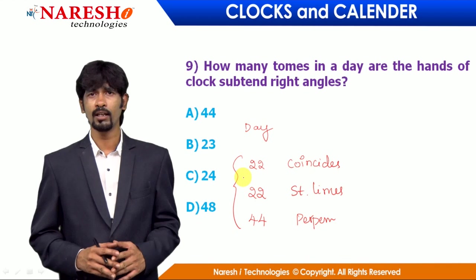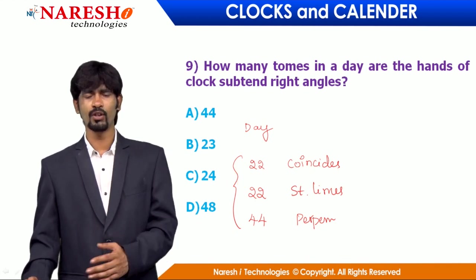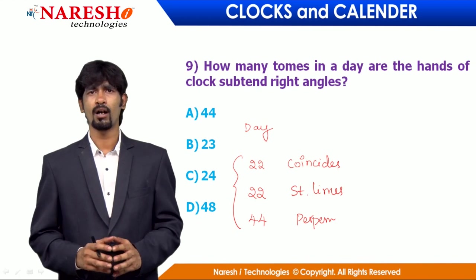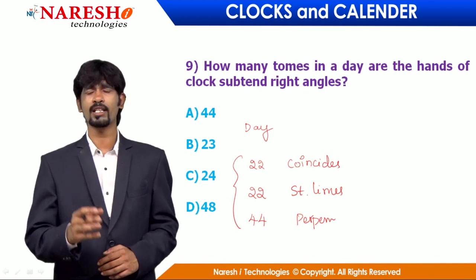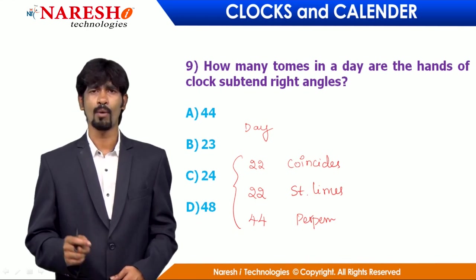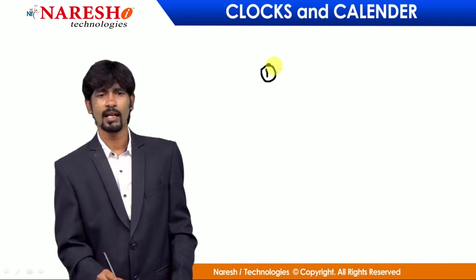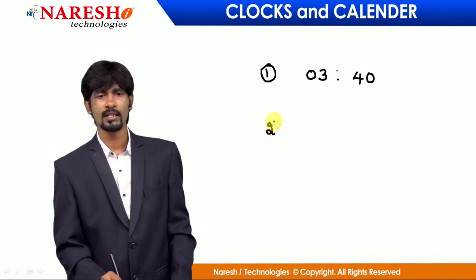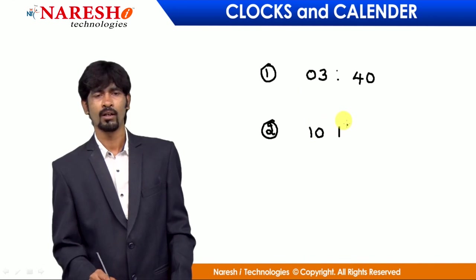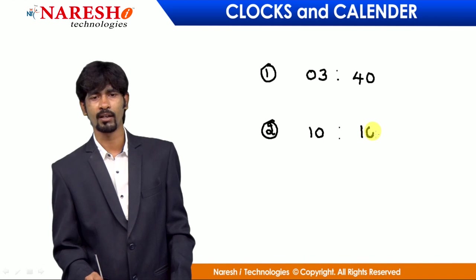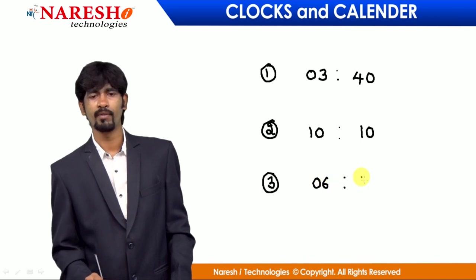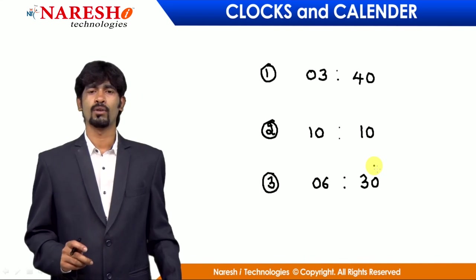I hope you have clarity on these questions. For homework, whoever has watched the video till the end: solve these three questions and put your answers in the comments. Question 1: time is 3 o'clock 40 minutes — what is the angle between minutes and hours hand? Question 2: time is 10 o'clock 10 minutes — what is the angle? Question 3: time is 6 o'clock 30 minutes — what is the angle? If you are unable to solve, comment and we will correct your answer. Thank you so much.